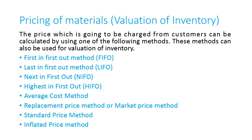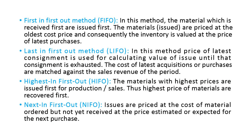The valuation of inventory can be done by 8 methods. First is First In First Out (FIFO), where materials received first are issued first. Last In First Out (LIFO), where materials received last are issued first. Highest In First Out (HIFO), where materials with highest price are issued first. Next In First Out (NIFO), where the price of materials ordered but not yet received is considered while selling.